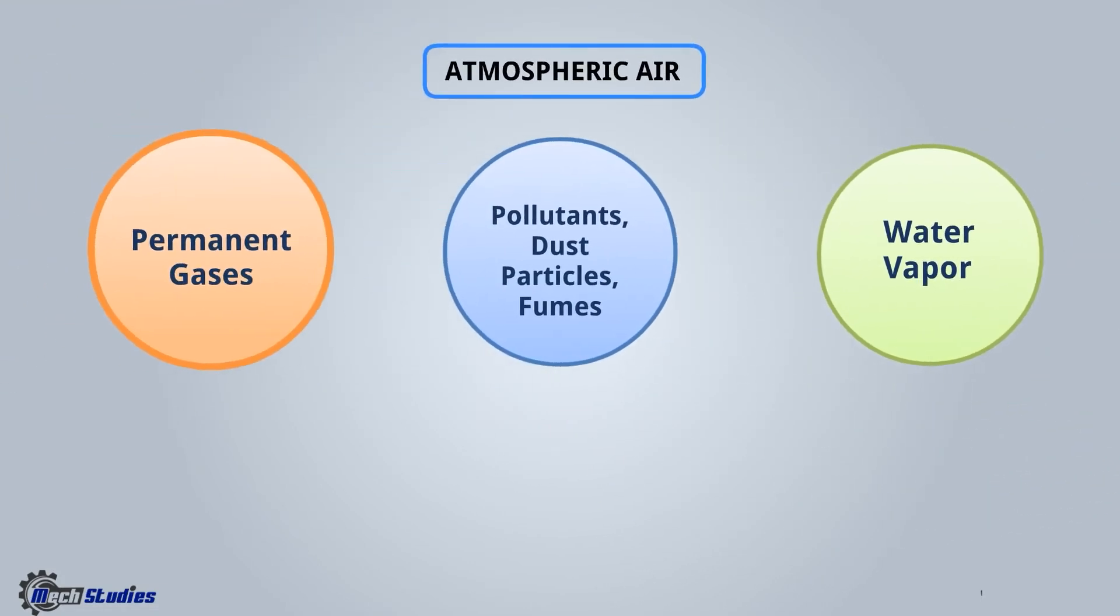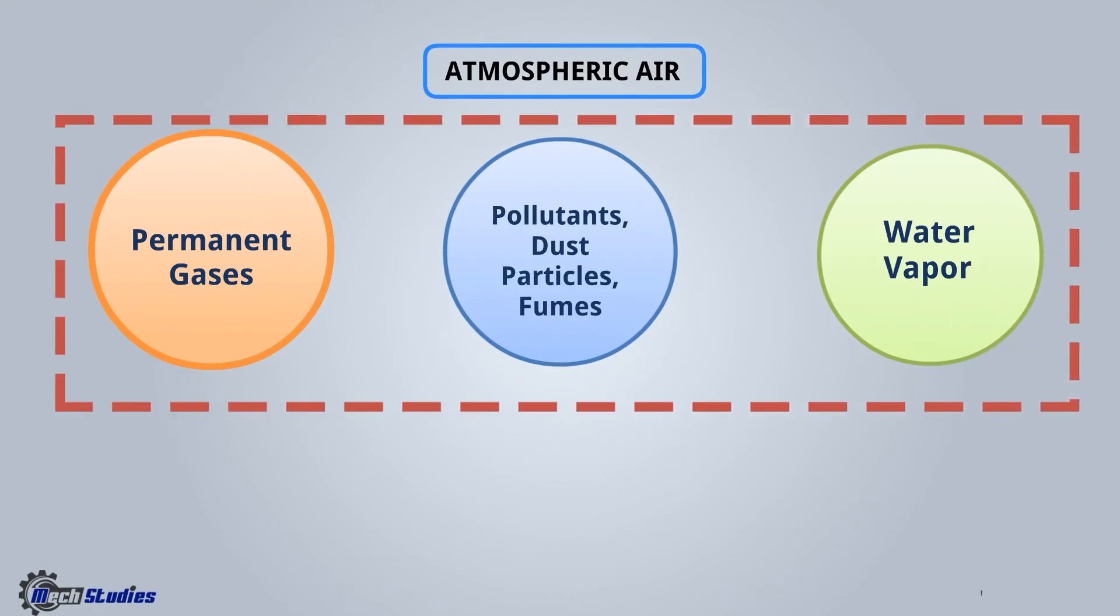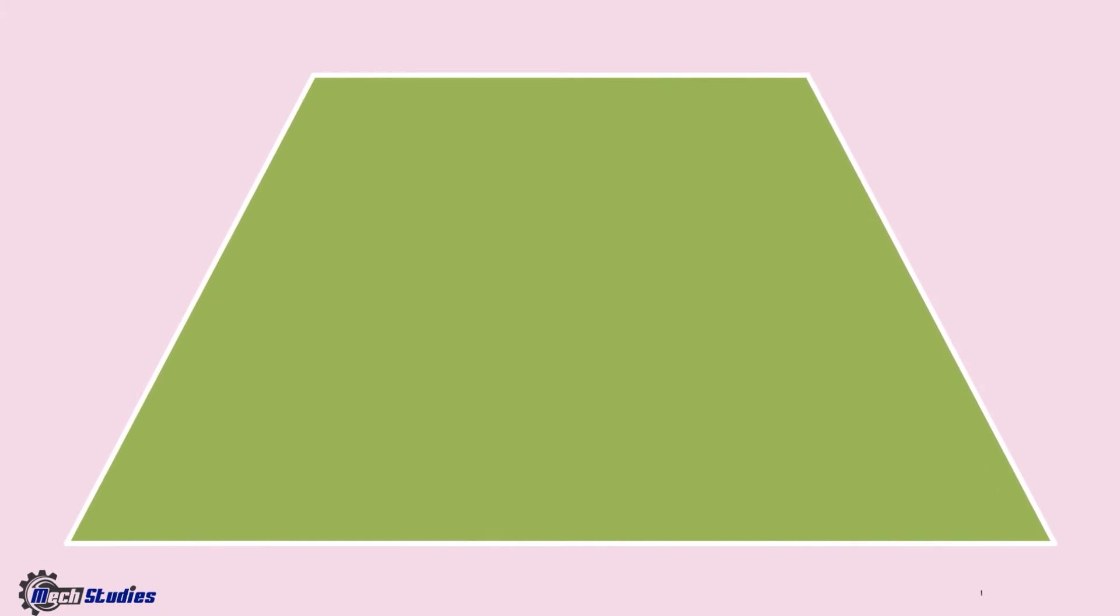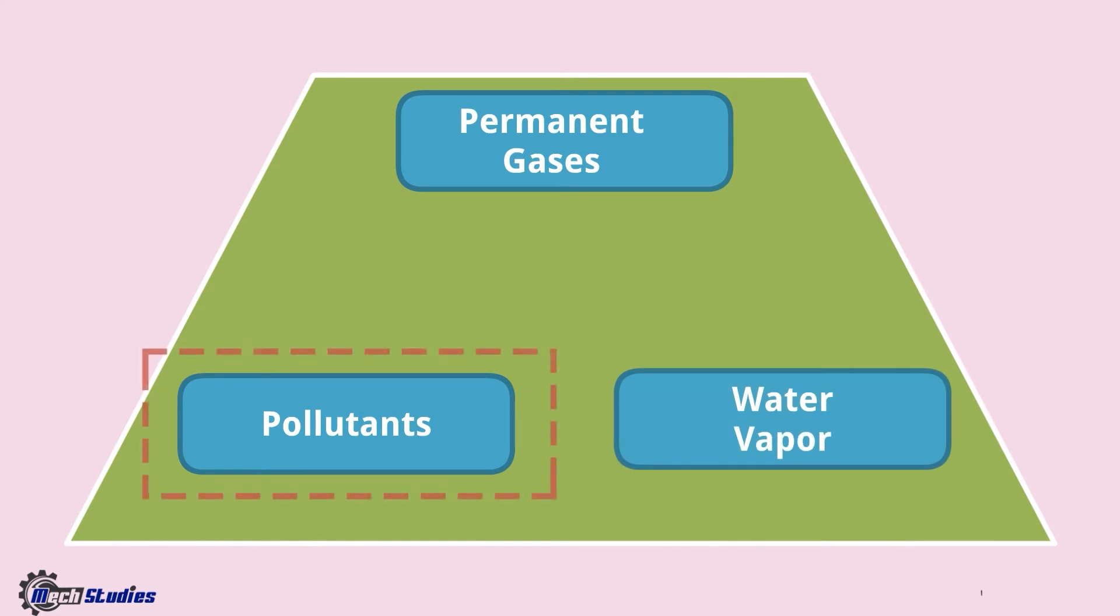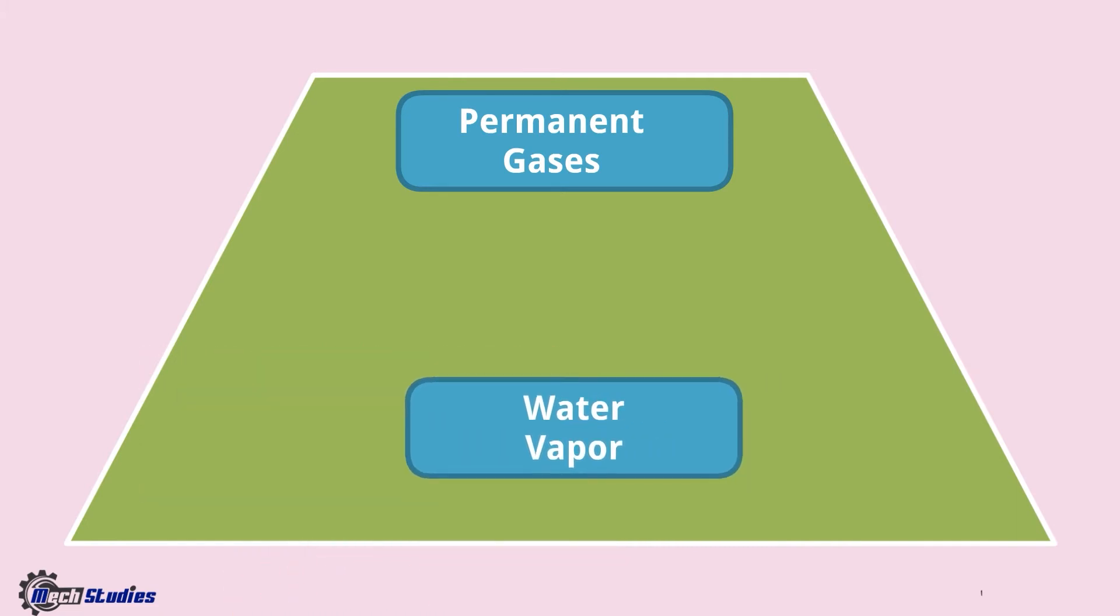So these three parts constitute atmospheric air. We understand atmospheric air consists of permanent gases, pollutants, and water vapor. Now if we remove pollutants by some means like filters, then the atmospheric air will have only permanent gases and water vapor.